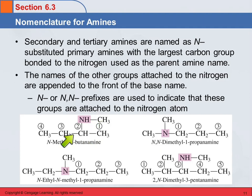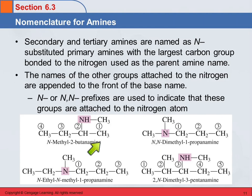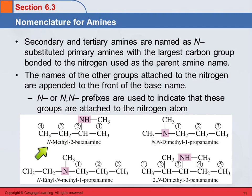The butyl group is larger, so we give this the base name of butanamine. The nitrogen is attached to the second carbon, so this is 2-butanamine. But then this has another group on the nitrogen — that's methyl. Put that in front. And since it's not attached to a carbon on the chain but to the nitrogen, we put a capital N: N-methyl-2-butanamine.